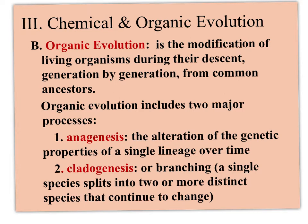Organic evolution has two main processes: anagenesis — the alteration of genetics in one lineage, following one particular species through time — and cladogenesis — the branching to see how multiple species split off from a main species.